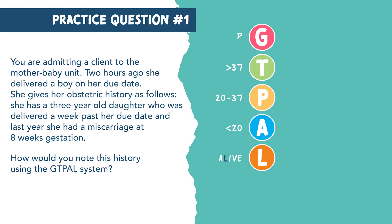Now we're ready to do our practice problem. You're admitting a client to the mother-baby unit. Two hours ago, she delivered a boy on her due date. She gives her obstetric history as follows: she has a three-year-old daughter who was delivered a week past her due date, and last year she had a miscarriage at eight weeks gestation. How would you note this history using the GTPAL system?